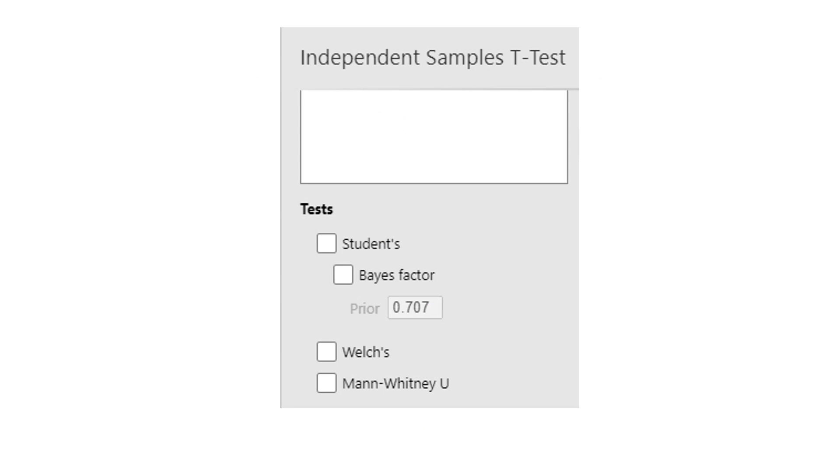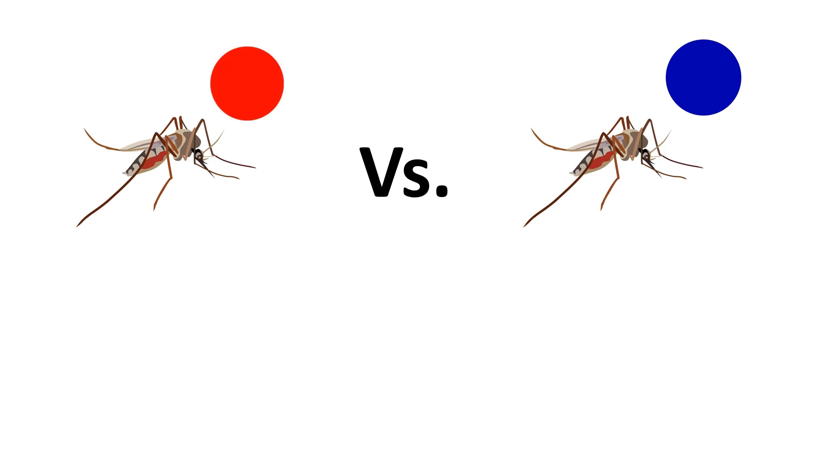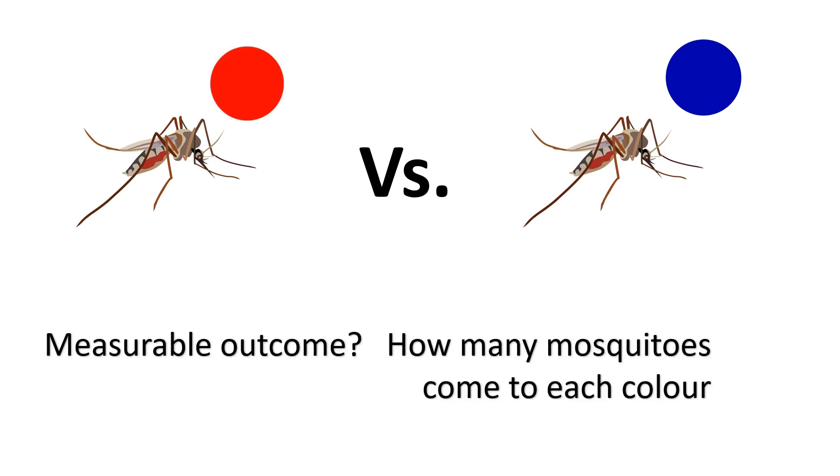Fortunately, however, that just means choosing a different button from the test section in Jamovi. The one we want to choose is called the Mann-Whitney-U test. Let's go through another final example. I read the other day that the color blue attracts twice as many mosquitoes as any other color. I'm going to compare blue to red and see how many mosquitoes come to each color.